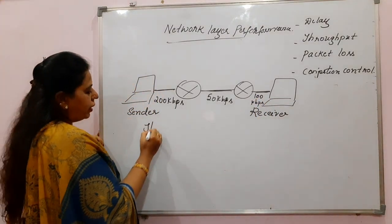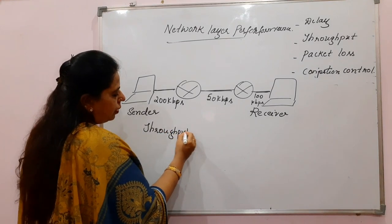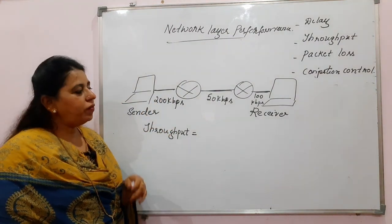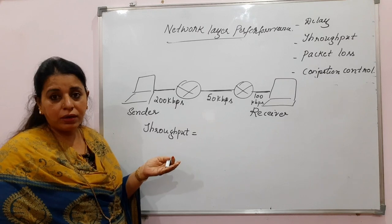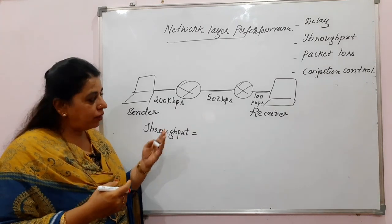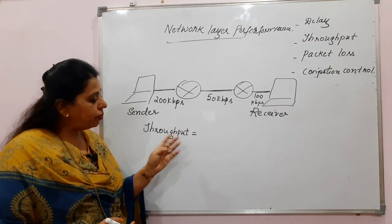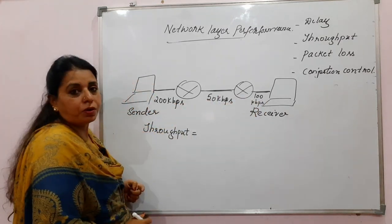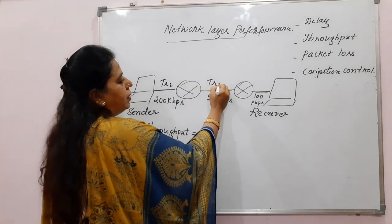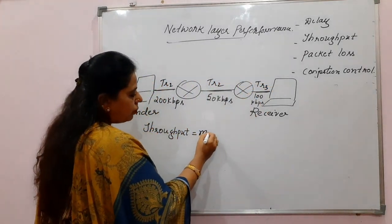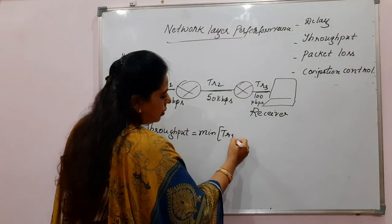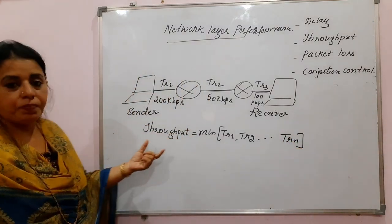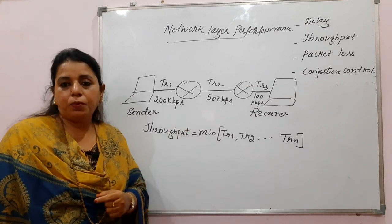If you have to calculate the throughput for this network, which transmission rate do you take? Normally we think we will take the average of these three, but not like that. The minimum of these becomes the throughput. So the minimum of transmission rate 1, transmission rate 2, transmission rate 3 — up to TR_N — the minimum of these transmission rates becomes the throughput of the network.